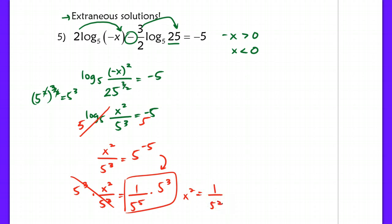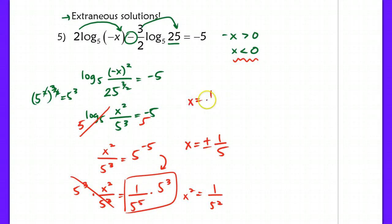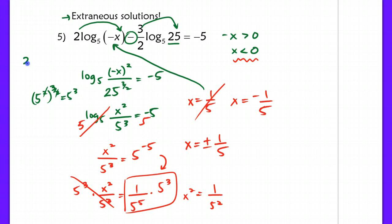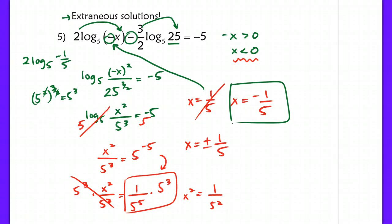Multiplying both sides by 5 to the 3rd leaves x squared equaling 1 over 5 squared. Taking the square root of both sides gives x equals positive or negative 1 fifth. But our domain requires x to be less than 0, so we throw out x equals 1 fifth. If we plugged in 1 fifth, we'd get log base 5 of negative 1 fifth, which is impossible since inputs must be positive for a log. Our only valid solution is x equals negative 1 fifth.